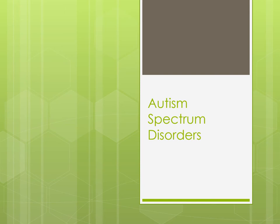Autism spectrum disorders have really been in the news a lot. They've been reconfigured quite a bit — Asperger's is no longer its own category. As the saying goes, if you've met one child with autism, then you've met one child with autism. As I talk about what I feel are generalities, we're seeing different characteristics in different people that come out in very individualistic ways.